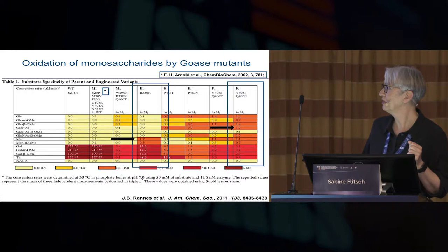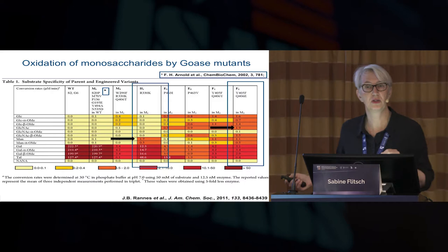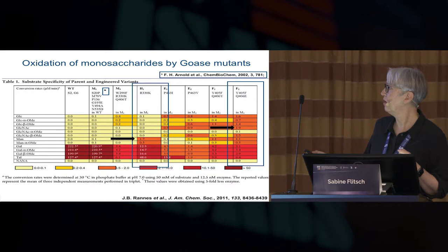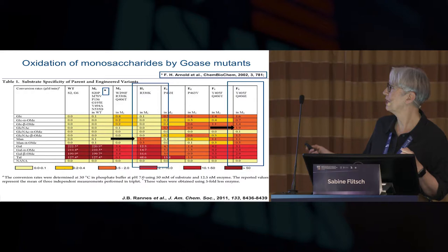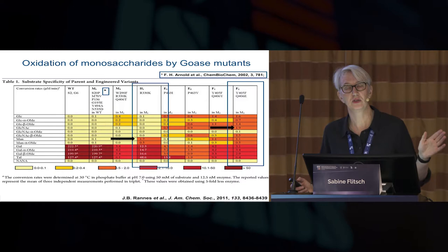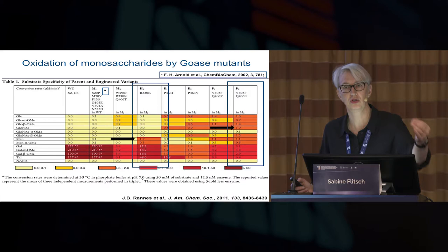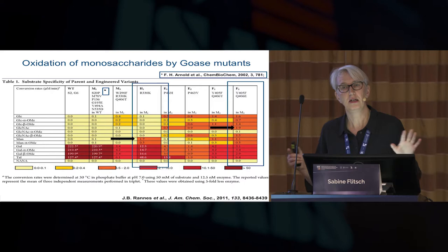Frances Arnold's mutant already has a little bit of activity against glucose — indeed, that's what she was looking for, an alternative glucose oxidase. But as we go along with our mutations, you get darker and darker colors — dark means high activity, white means low activity. You can see mutants like the F2 mutant that now actually has very broad selectivity. So we haven't changed the selectivity from galactose to another sugar yet, but we have broadened it significantly.